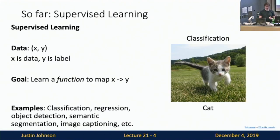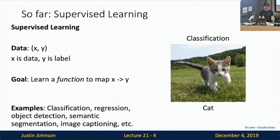So far in this class, we've talked about a couple of different major paradigms of machine learning. The first, of course, is supervised learning. In supervised learning, we get a big dataset of inputs X as well as outputs Y that we want to predict from the inputs. Our goal is to learn some function that predicts the Y's from the X's. We've seen many examples of supervised learning throughout the class, and it works very well for a lot of different types of problems in computer vision.